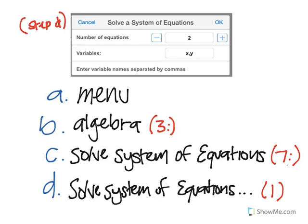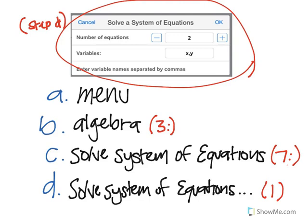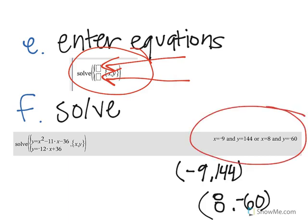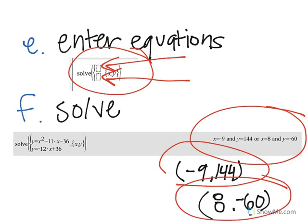Then it'll come up with a thing that looks a little bit like this on your calculator. And then you're going to plug in right here the number of equations and the variables. So then it's going to come up with this, and you're going to plug in the equations right here and here, and then press solve command, and it will give you something a little bit like this. And they say them in the order in which they're paired, so negative 9 and 144, and 8 and negative 60.